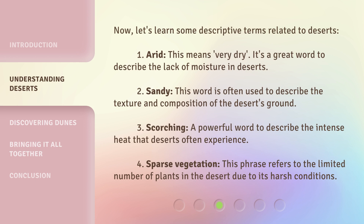1. Arid — this means very dry. It's a great word to describe the lack of moisture in deserts. 2. Sandy — this word is often used to describe the texture and composition of the desert's ground. 3. Scorching — a powerful word to describe the intense heat that deserts often experience. 4. Sparse vegetation — this phrase refers to the limited number of plants in the desert due to its harsh conditions.